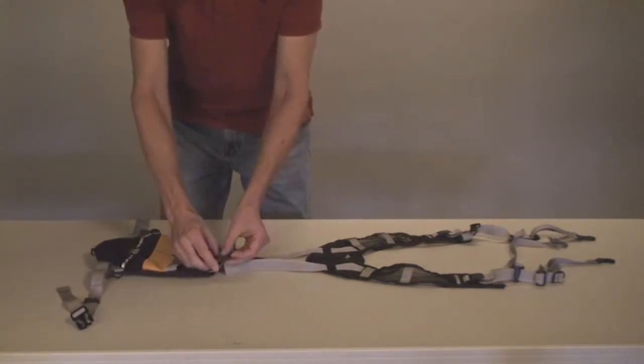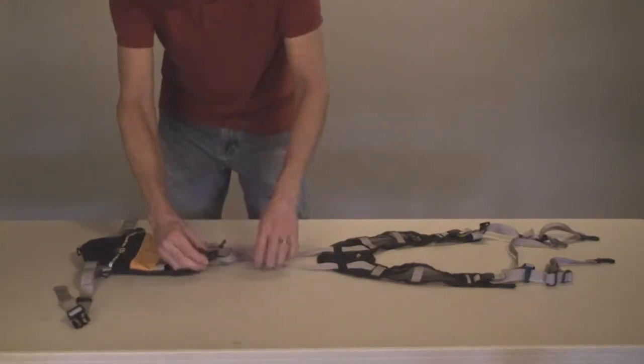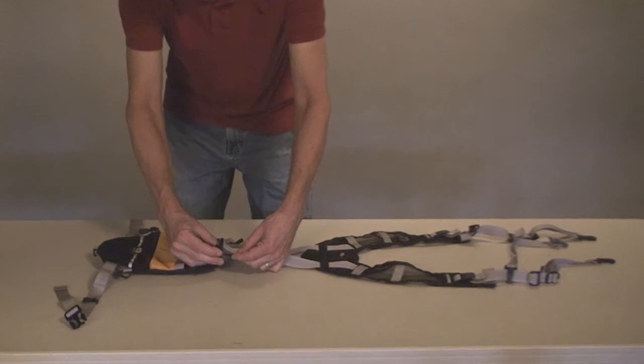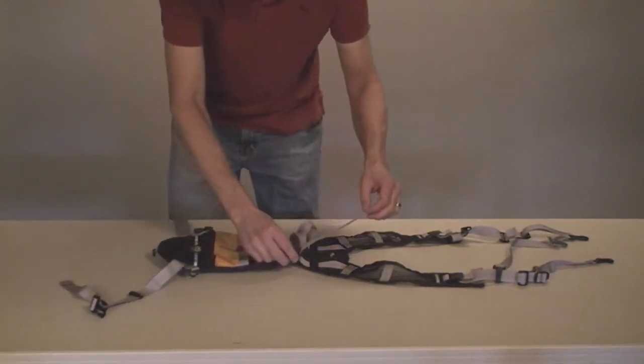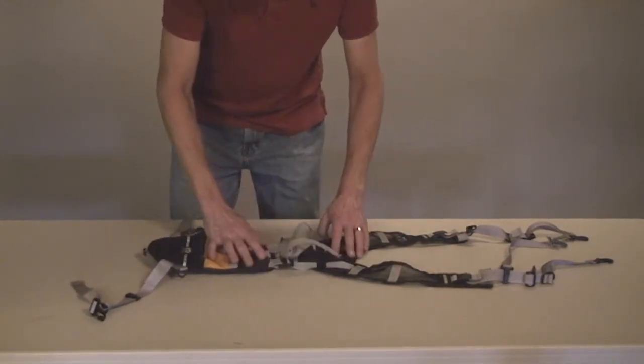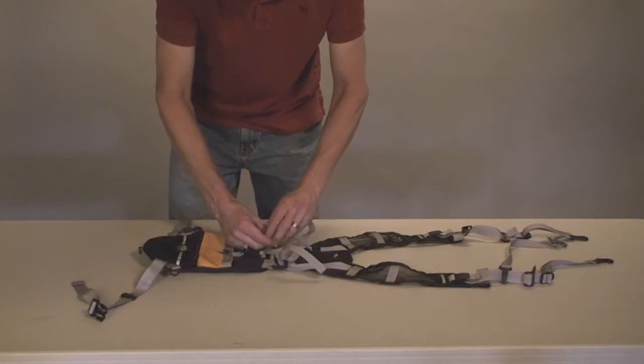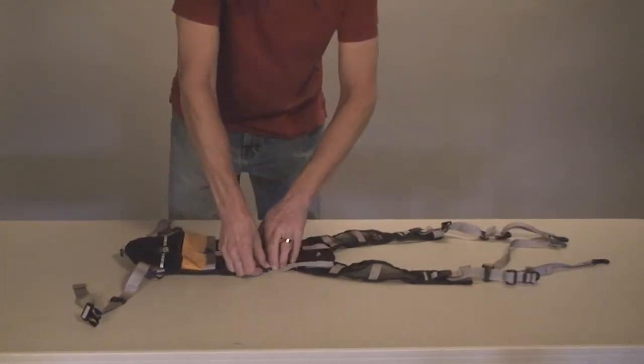You'll take this cam buckle, which is attached to the reservoir pouch, open up the lever, slide the webbing underneath and through the top, and you can bring it all the way up. Depending on how tall you are, you can leave it right here if you're rather tall, 6 feet or so, and then snap it closed.